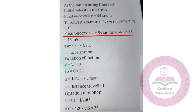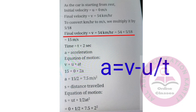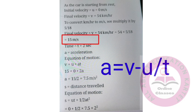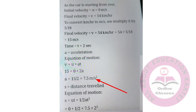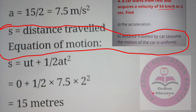Time equals 2 seconds. Acceleration A equals V minus U by T: 15 minus 0 divided by 2 equals 7.5 meters per second square. For distance S, using S equals UT plus half AT square, the final answer is 15 meters.